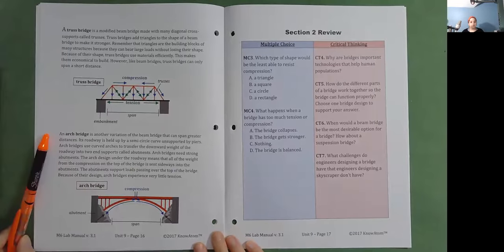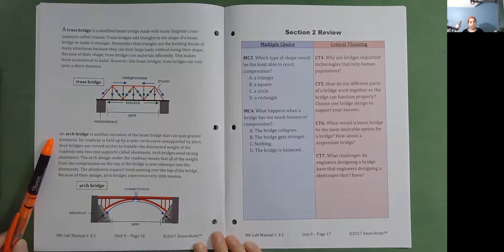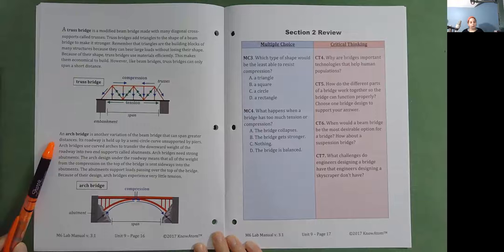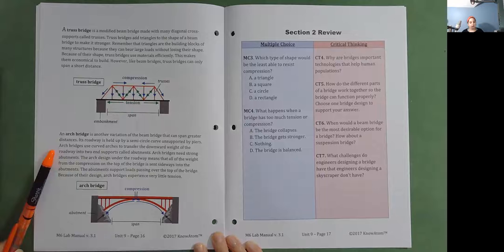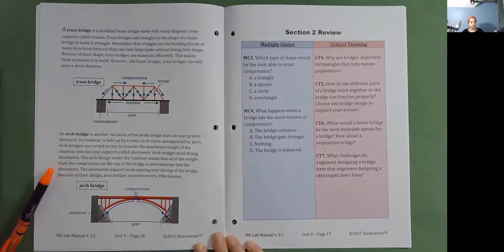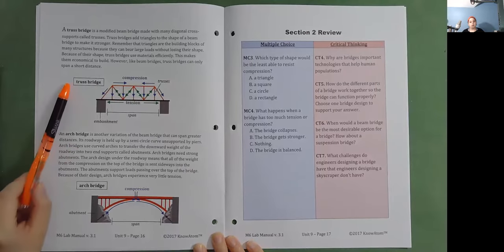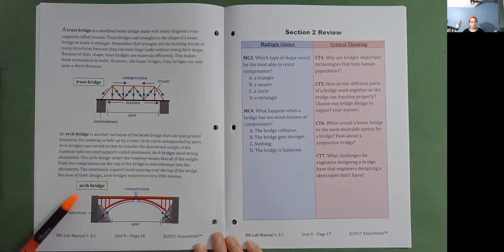An arch bridge is another variation of the beam bridge that can span greater distances. Its roadway is held up by a semicircle curve unsupported by piers. Arch bridges use curved arches to transfer the downward weight of the roadway into two end supports called abutments. Arch bridges need strong abutments. The arch design under the roadway means that all of the weight from the compression on the top of the bridge is sent sideways into the abutments. The abutments support loads passing over the top of the bridge. Because of their design, arch bridges experience very little tension. So here's a diagram of a truss bridge and an arch bridge.